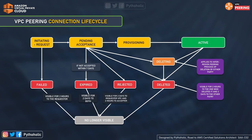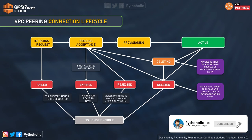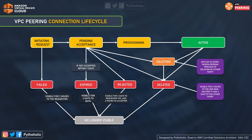In the lifecycle flow: you initiate a request which goes to pending acceptance, the acceptor accepts it moving to provisioning and then to active state. From active, you can only delete it — you cannot reject, expire, or fail it. From pending, if the request is not accepted it gets expired, rejected, or deleted. If you cancel the request early, it goes to failed and is visible for two hours to the requester. States include: initiating request, pending acceptance, provisioning, active, deleting, deleted, rejected, expired, or failed, and eventually no longer visible after a certain time.